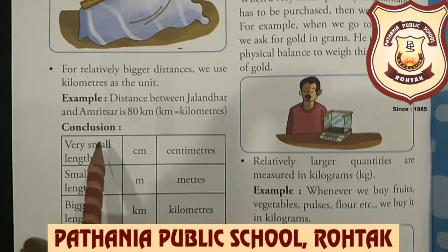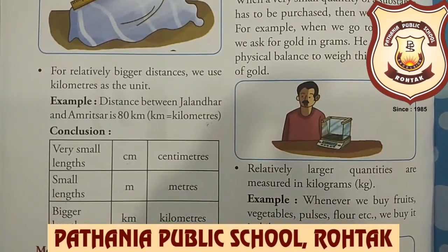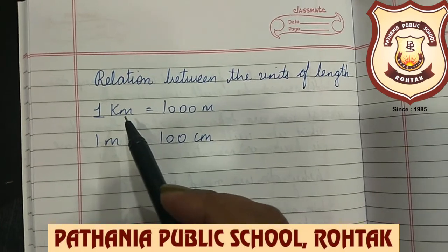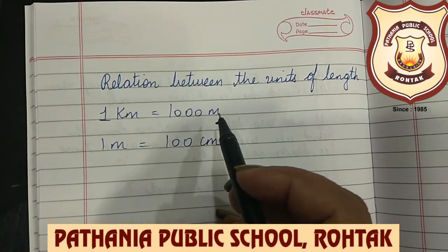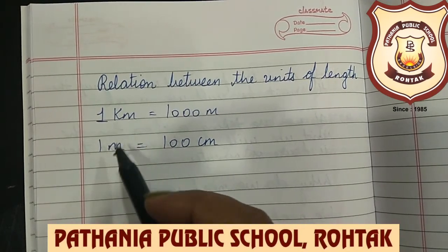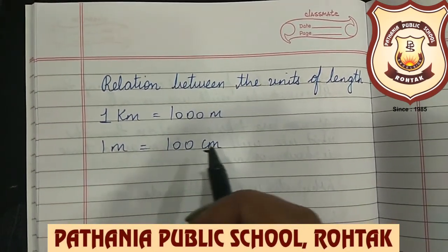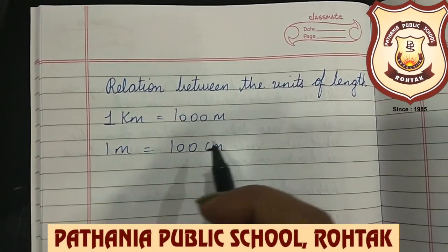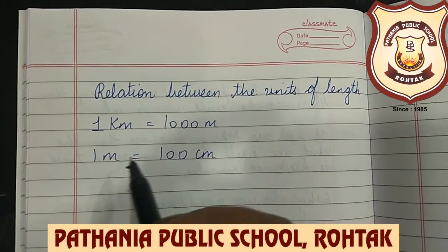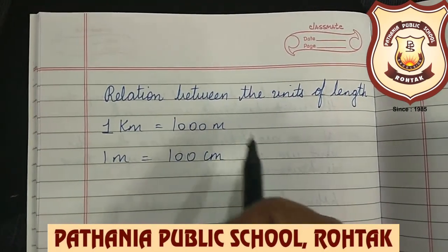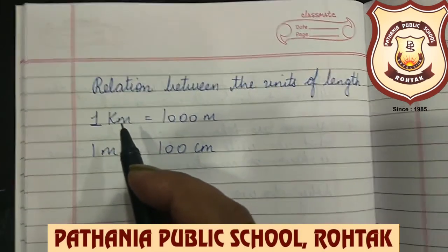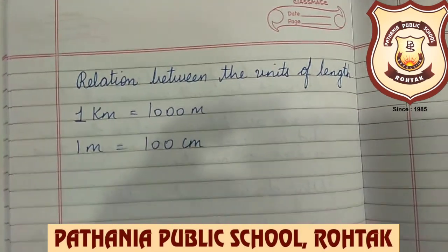Now let's understand how these units are related to each other. Kilometer is the biggest unit: 1 km equals 1000 meters. Meter is bigger than centimeter: 1 meter equals 100 centimeters. So centimeter is the smallest, then meter, then kilometer — and these units are all interconnected.